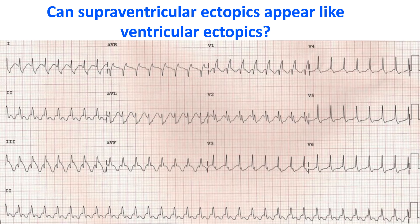Supraventricular ectopics usually have a narrow QRS complex with a duration less than 120 ms. But when conduction down to the ventricles is abnormal, as in a pre-existing bundle branch block or a transient conduction block induced by prematurity, the QRS complexes can be wide and mimic a ventricular ectopic beat. A preceding P wave, if present, may indicate the supraventricular origin. It is also possible to have a ventricular ectopic soon after a sinus P wave which appears in a similar way. This ECG shows supraventricular tachycardia with aberrant conduction having right bundle branch block morphology.